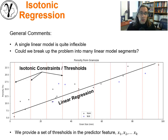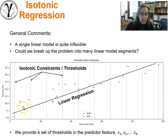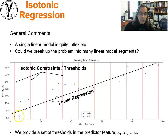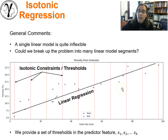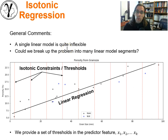Now what are we going to do with the isotonic approach? The linear model is kind of inflexible. If we had a data set like this — if you look carefully, it has a little curvilinearity; it goes up and then across, it's not quite linear. If we fit a linear regression model to it, we're going to get something that in the middle has a high degree of bias. So why don't we try to make our linear model more flexible by breaking the problem into many, or at least a few, linear model segments?